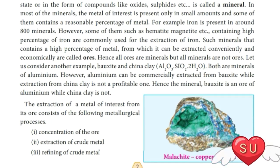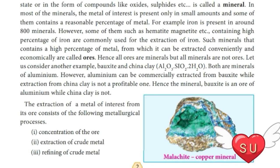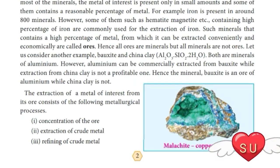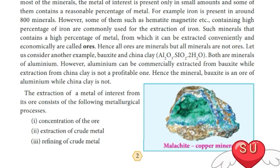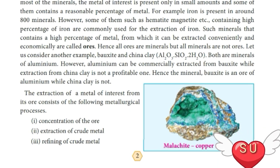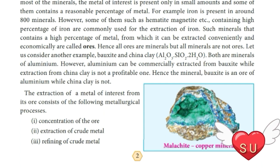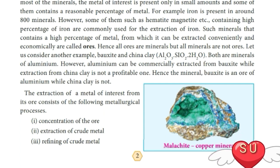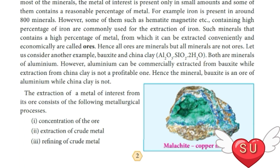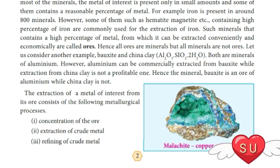Bauxite and china clay are both minerals of aluminium. However, aluminium can be commercially extracted from bauxite and not from china clay, because bauxite contains a high percentage of metal whereas china clay contains a lesser amount.